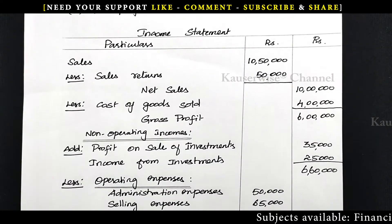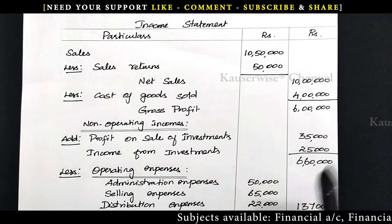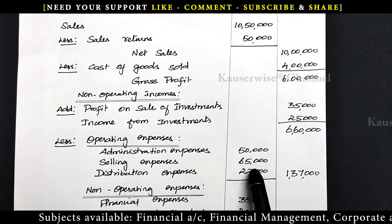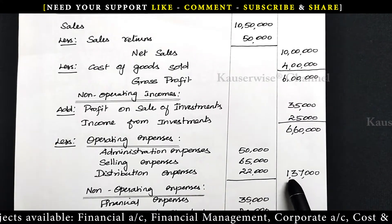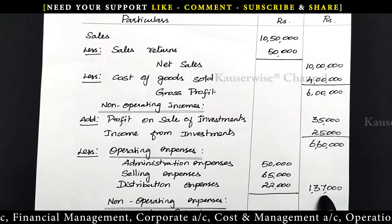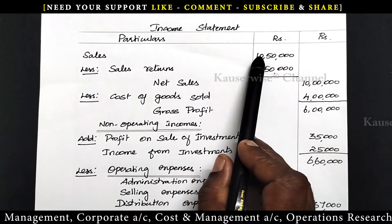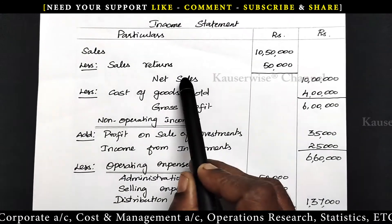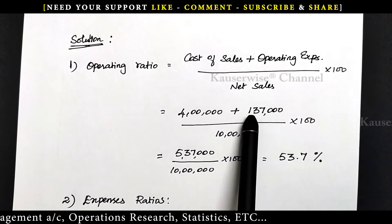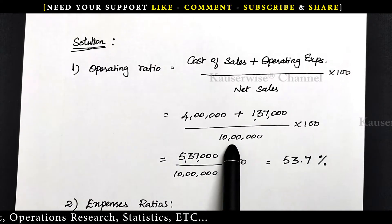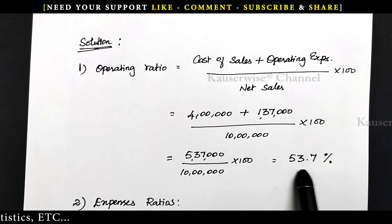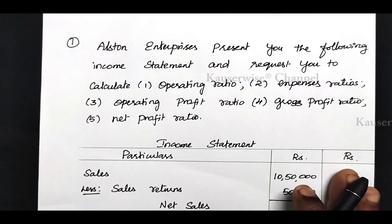Looking at the problem: cost of goods sold is 4 lakhs and operating expenses — administrative 50,000 plus selling 65,000 plus distribution 22,000 — total 1 lakh 37,000. So, cost of goods sold 4 lakhs plus operating expense 1 lakh 37,000 divided by net sales 10 lakhs into 100 equals 5 lakh 37,000 divided by 10 lakhs into 100, giving 53.7 percentage. This is the operating ratio.